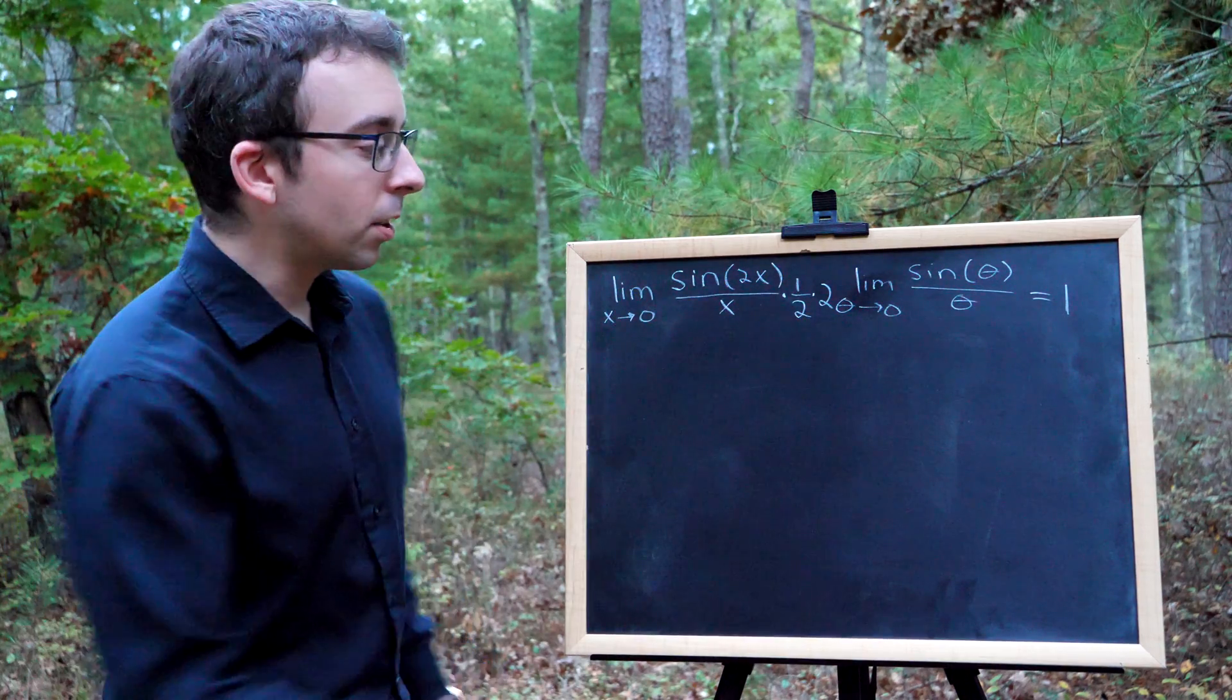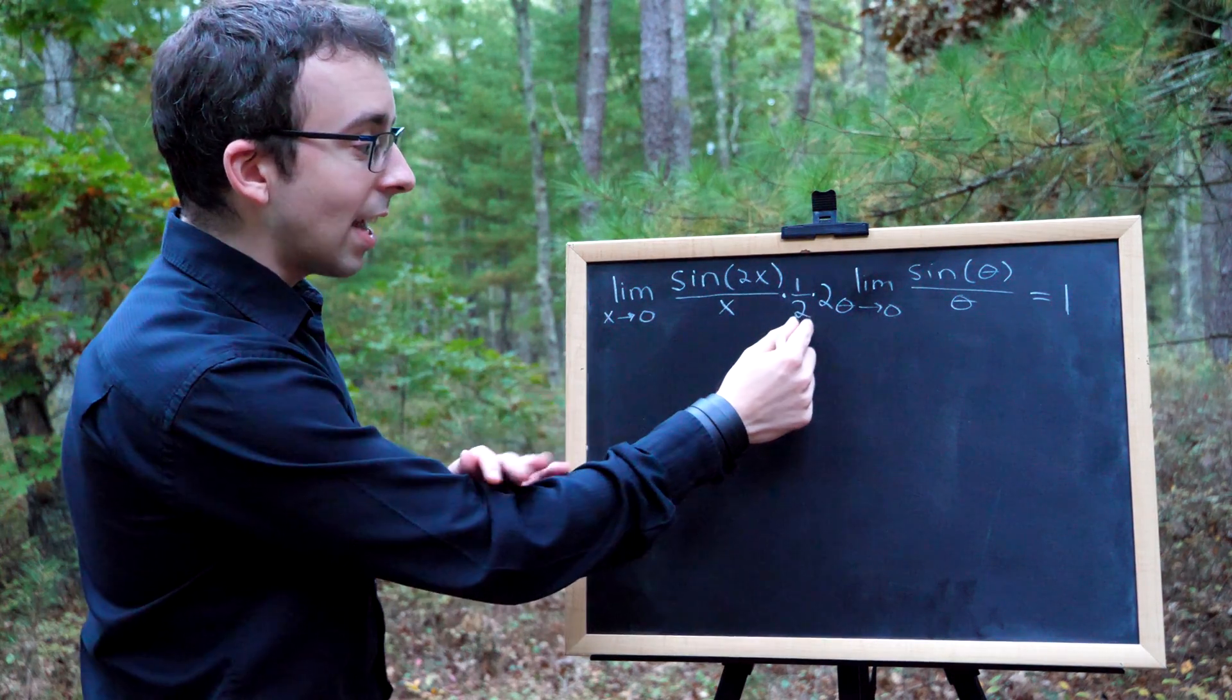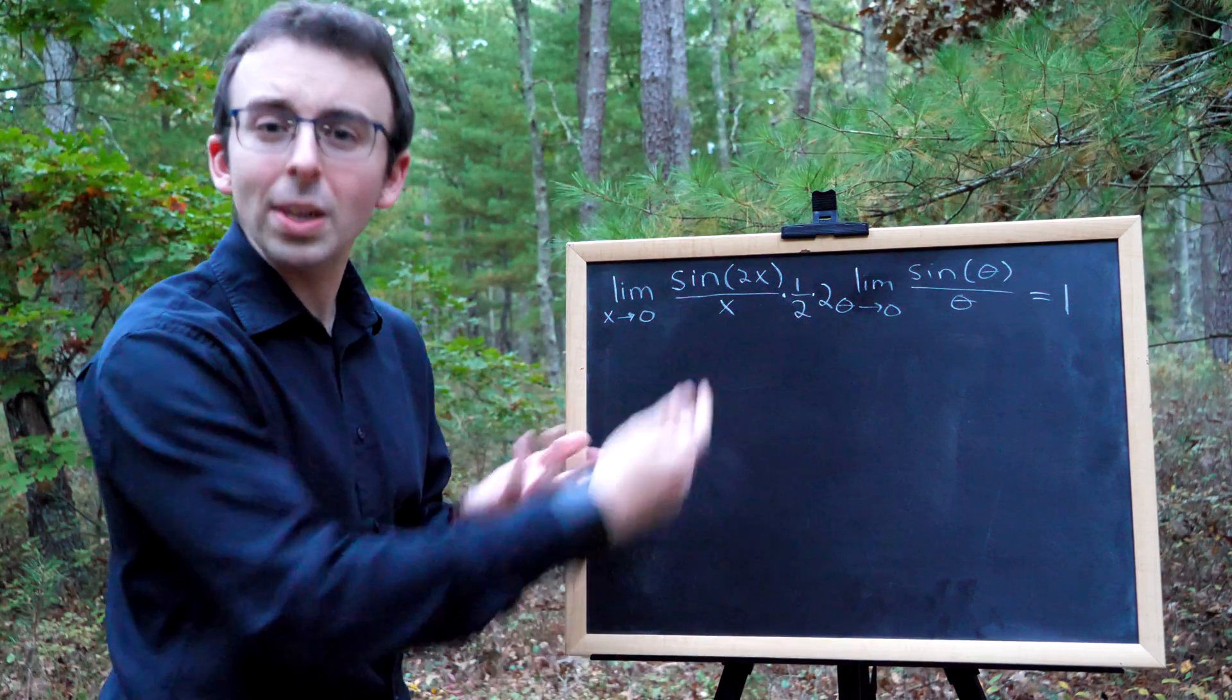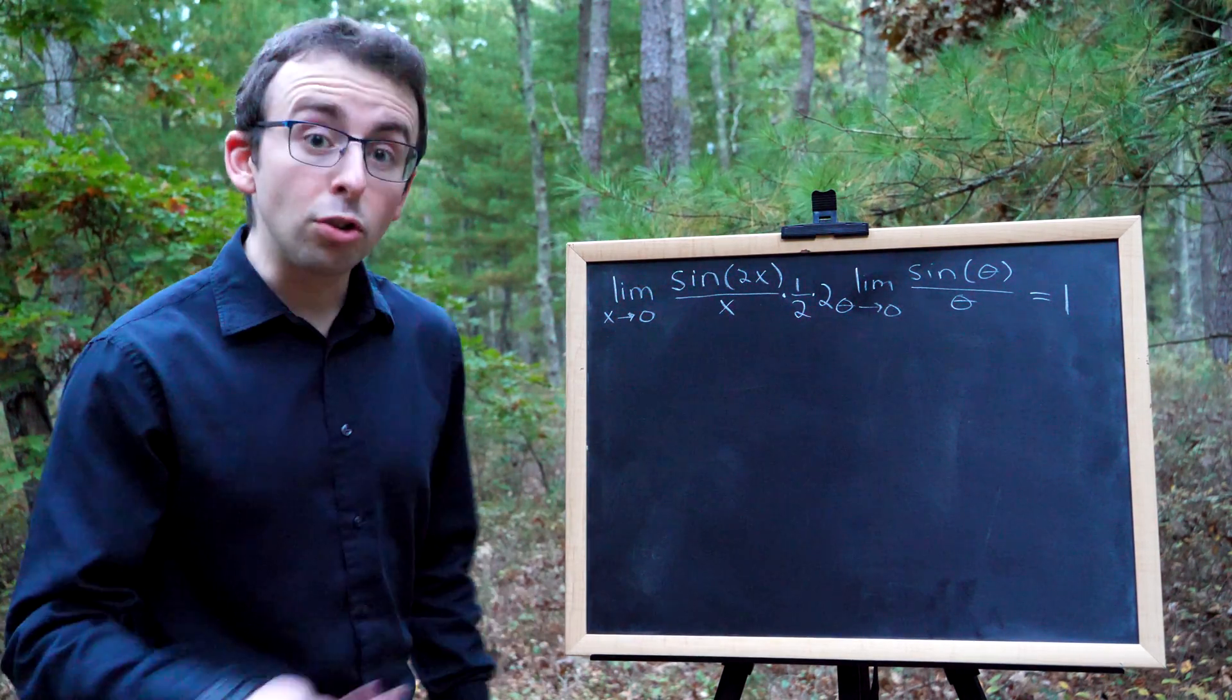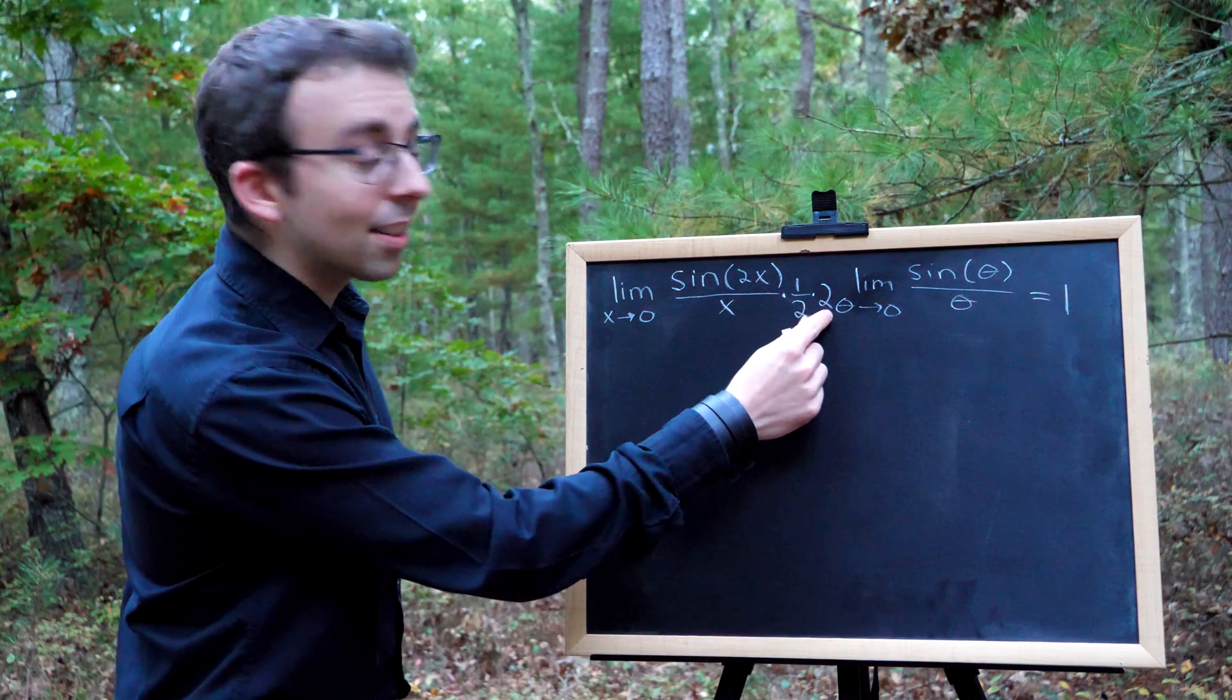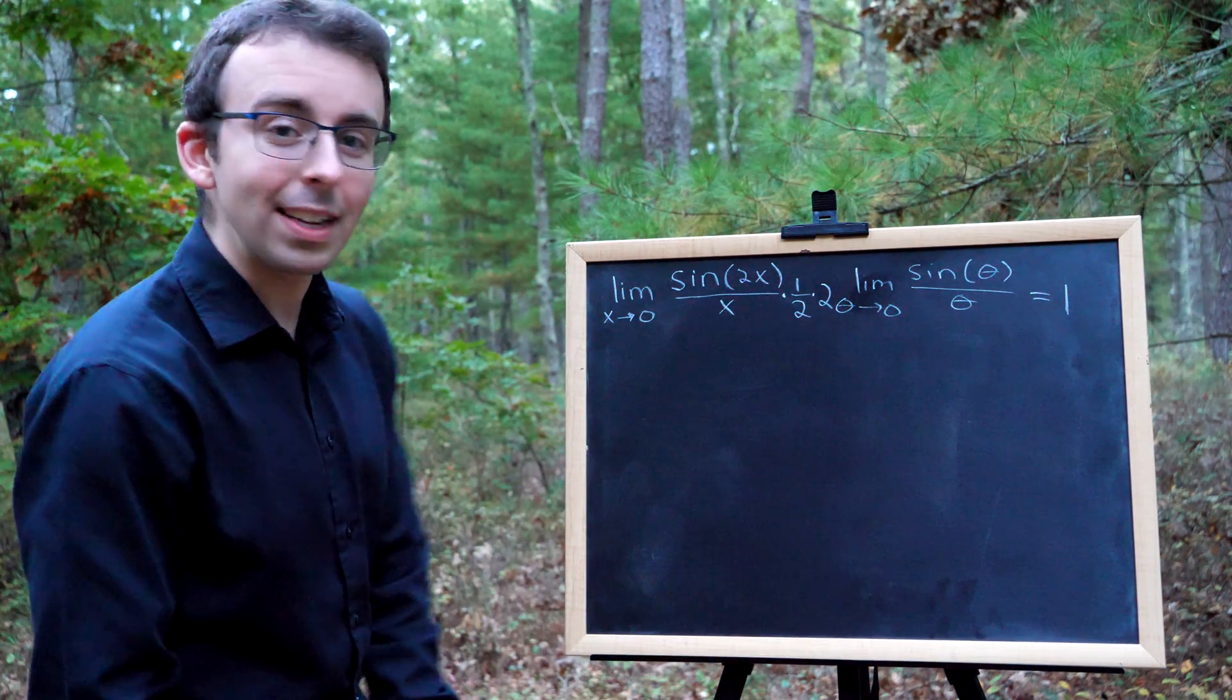You may recall, when we've got products in a limit, we could take these factors out, or we could leave them inside the limit. Either one's fine. Since it suits my purposes, I'm going to take the factor of 2 out of the limit, and I'm going to leave one half inside.